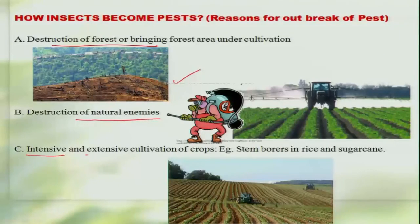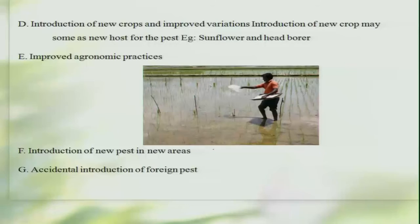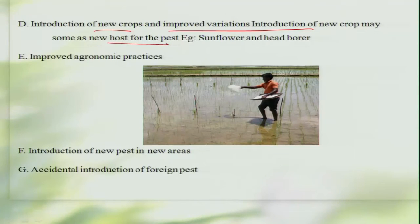A third reason is extensive and intensive cultivation of crops. For example, sometimes thousands of acres are covered under a single crop like paddy, sugarcane, or cotton. If this happens, the insects thriving on such crops get a tremendous opportunity to multiply and become quite pestiferous. The next reason is the introduction of new crops or improved varieties, which can also lead to the formation of pests. Any agronomic practices introduced will be quite beneficial to these insects and lead to a pestiferous nature.